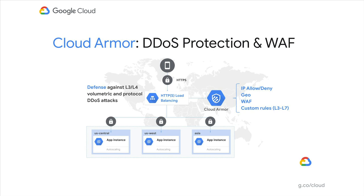Cloud Armor security policies can be configured and attached to the load balancer backend services to further provide layer 7 application layer protection and access controls. Cloud Armor security policies can be configured to limit access based on source IP or geo, a pre-configured WAF rule set, as well as our fully customizable rules language to craft custom layer 7 filtering policies.